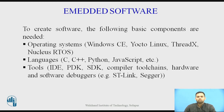To create software, the following basic components are needed. First is the Operating System. Different types of operating systems are used to design embedded applications — Windows CE, Linux, ThreadX, Nucleus, RTOS, and similar systems. Second is Languages: programs are written in C, C++, Python, JavaScript, Visual Studio, and other languages. Third are Tools: IDE, PDK, SDK, Compiler Toolkit, Toolchains, and Hardware and Software Debuggers such as ST-Link and SEGGER.